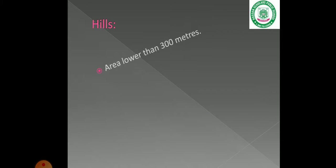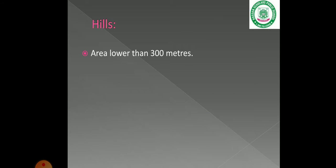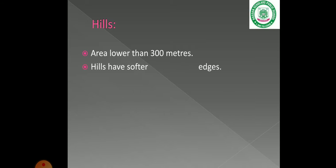Next are hills. Hills are lower than mountains — less than 300 meters in height. Hills have softer, more rounded edges, unlike mountains which are steeper and more rugged.